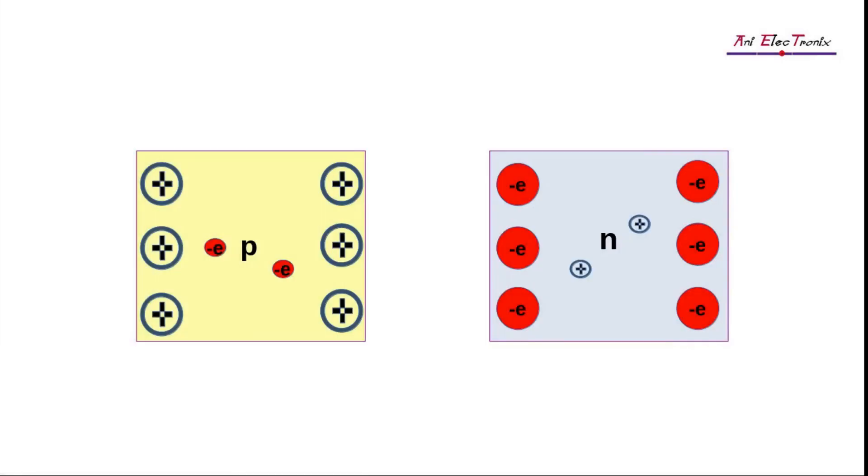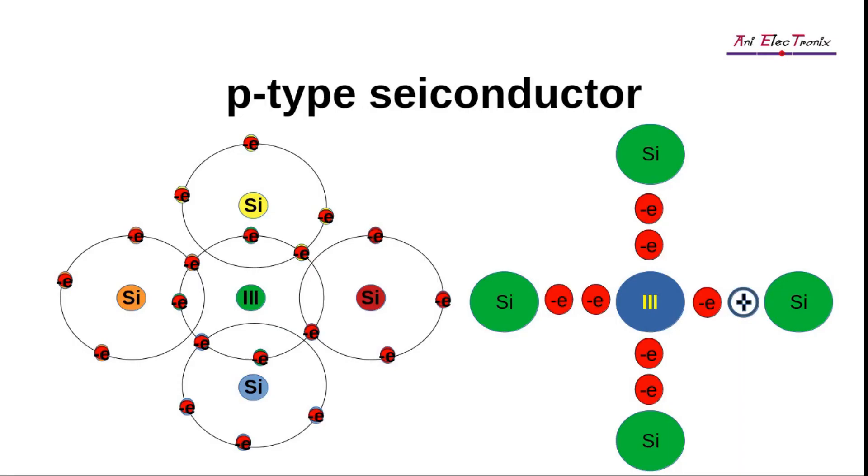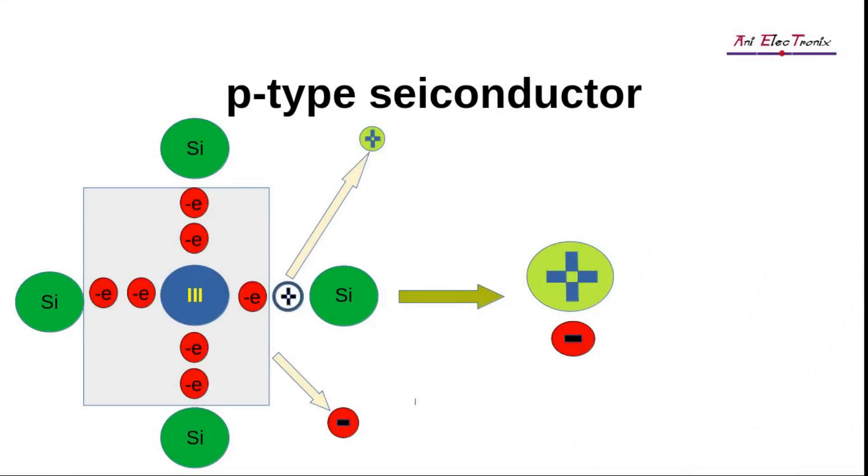We can now visualize the N-type and P-type semiconductor in a very detailed manner. When a pure silicon crystal is doped with a trivalent atom, a hole is created in the valence orbit of the trivalent atom. The charge of the hole is positive, and we represent the hole with a plus symbol. As the equivalent charge of the trivalent atom is negative, it will be represented with a minus symbol. This is how a P-type semiconductor can be visualized.